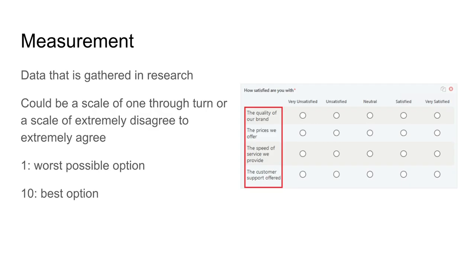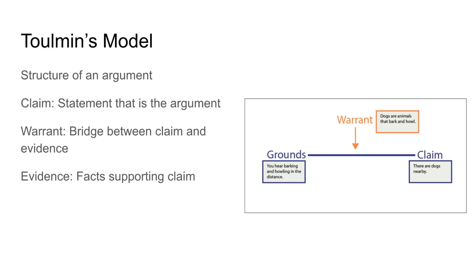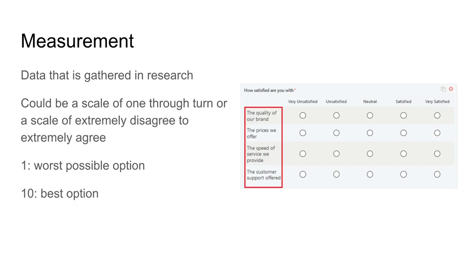The last thing I want to talk about is measurement, which is a kind of data used in research. It could be a scale — like how likely are you to take this class again, one to ten, ten being the highest and one being the lowest. Or it could be something like the surveys we see on the right, similar to receipt surveys when you go shopping. For example, rating the quality of a brand: are you satisfied or very unsatisfied?